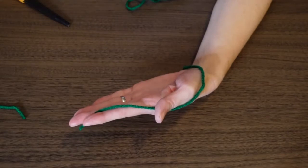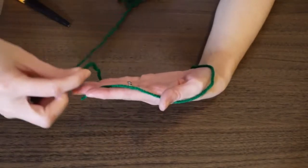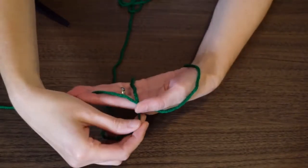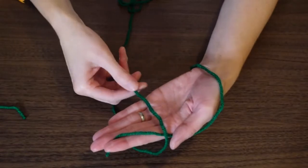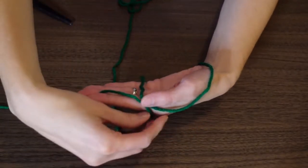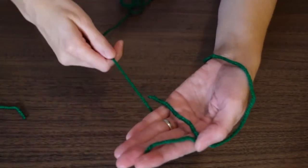And then I just drape it over my left hand and hold the end in between my two fingers. And then I take my right hand and take that yarn, and I just start to wrap my left hand over and over.